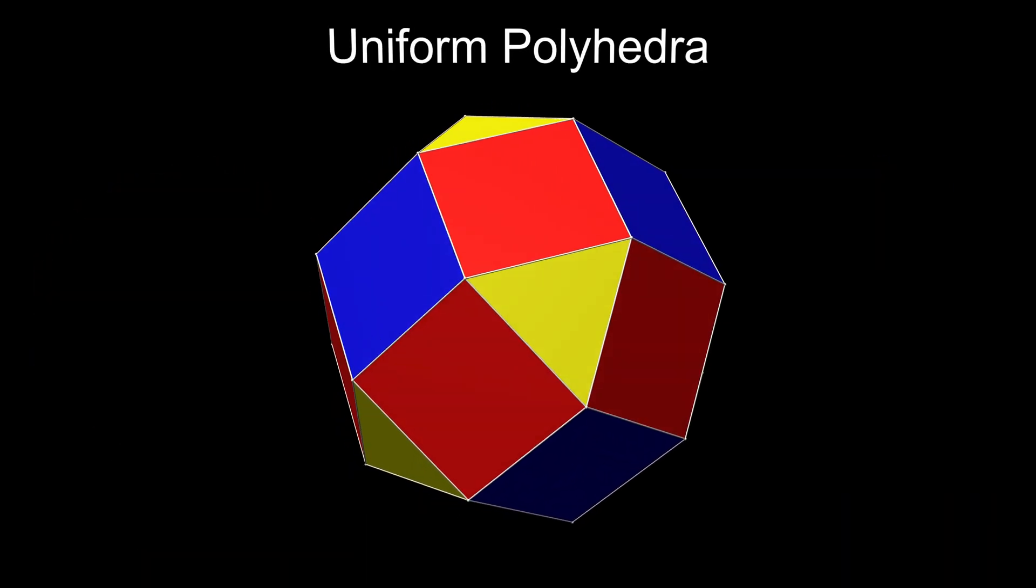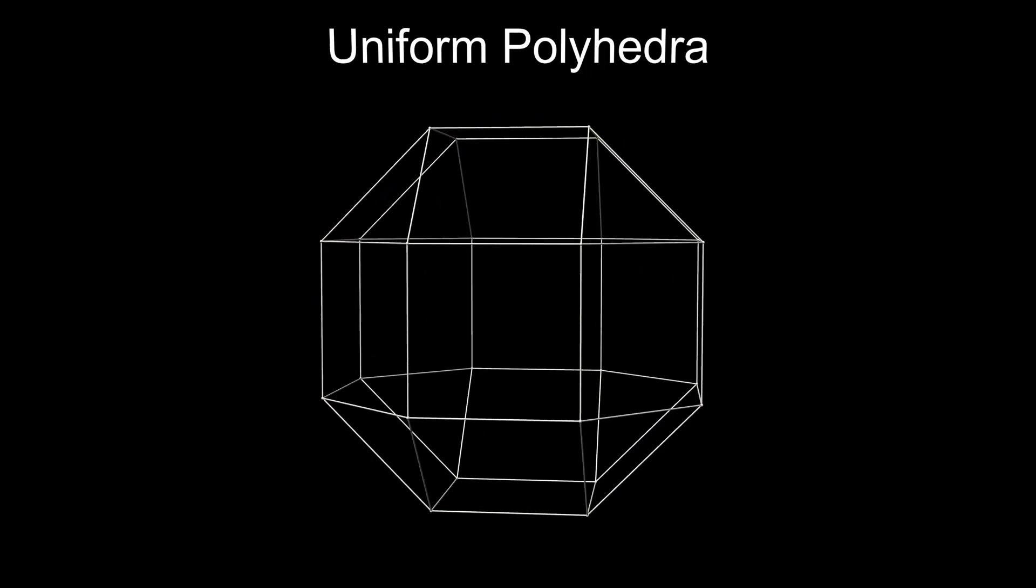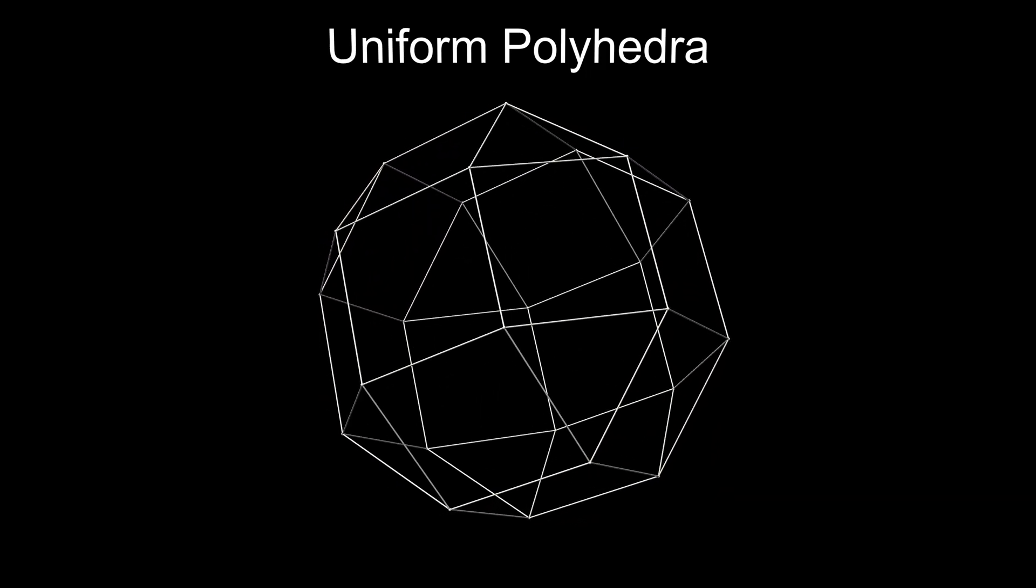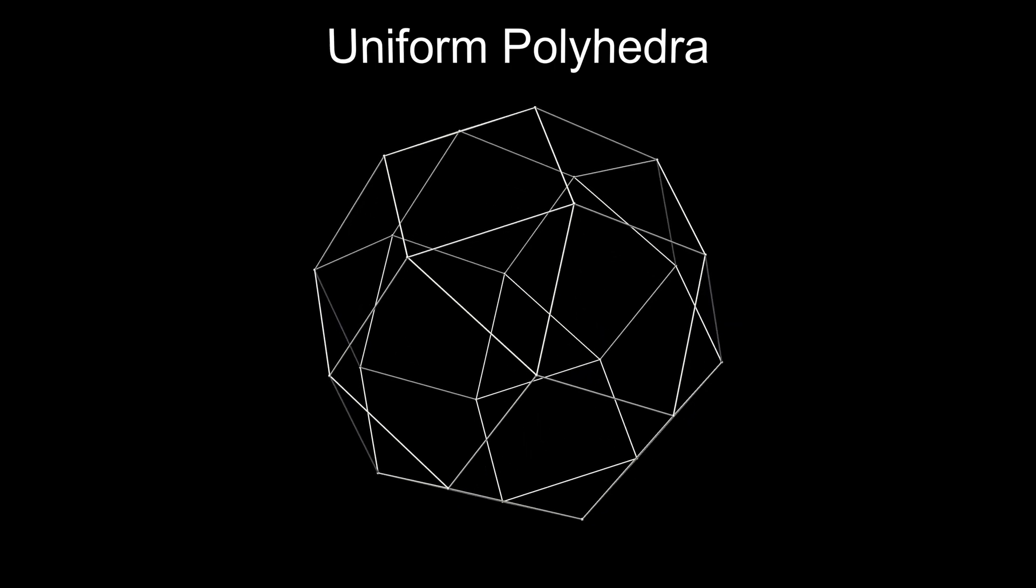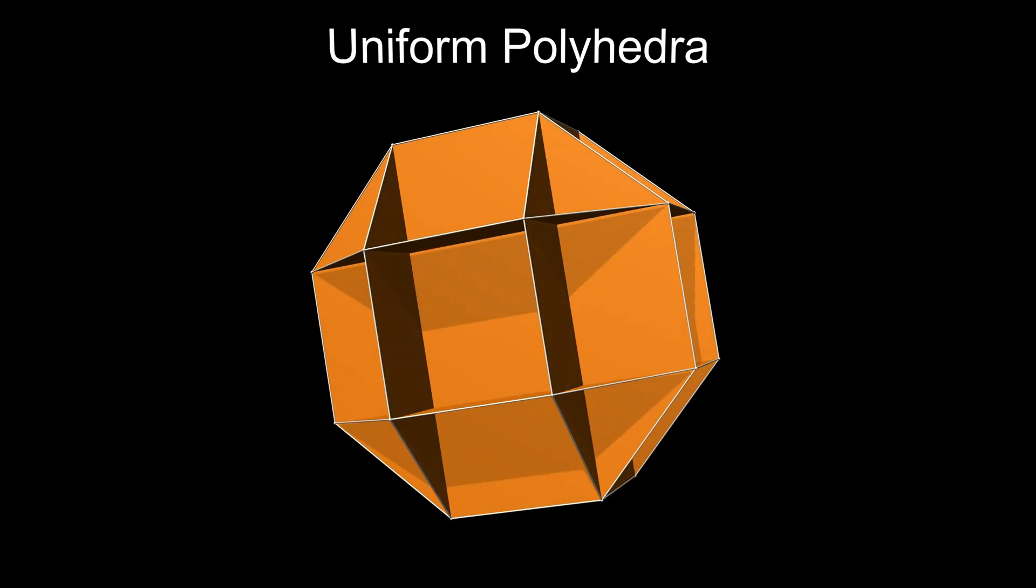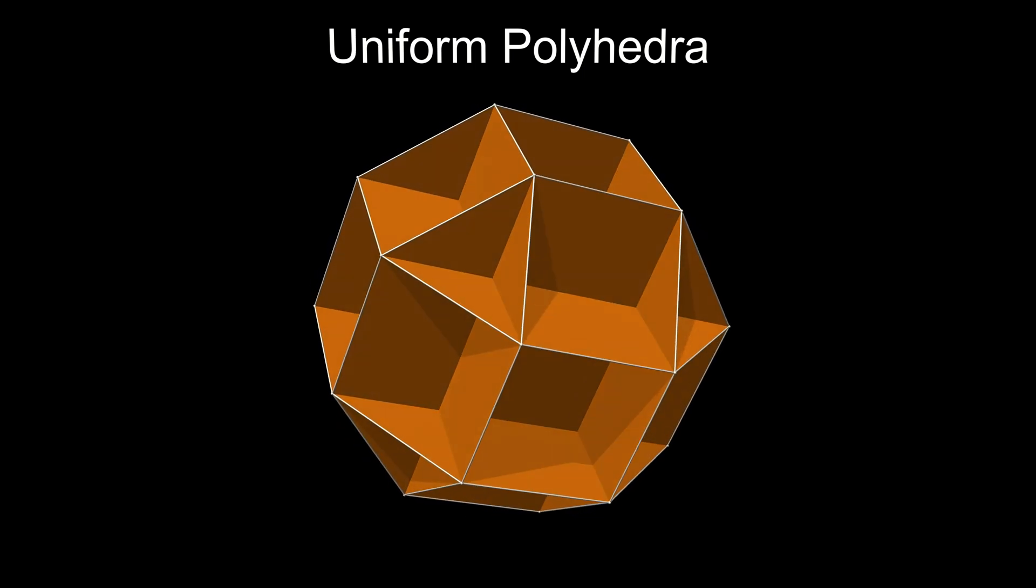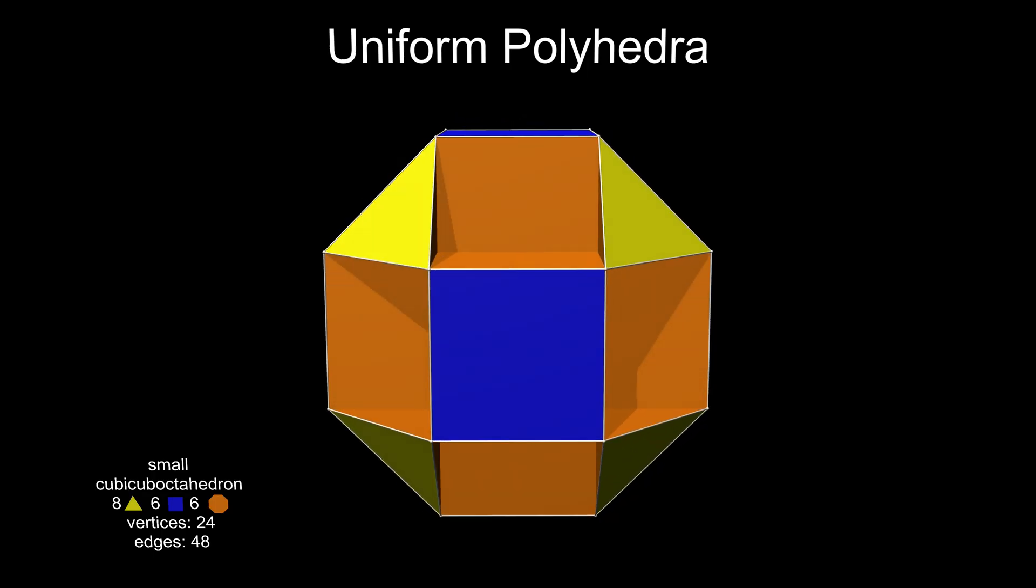If you take a rhombicuboctahedron and remove the faces, leaving a wireframe model of just the edges, you can reuse the same edges by fitting it with six intersecting octagons. A complete polyhedron can then be made by restoring the original triangles and six of the squares. This is the small cubicuboctahedron.